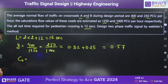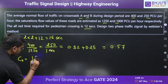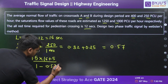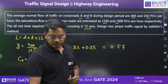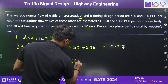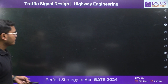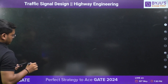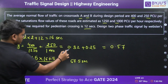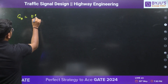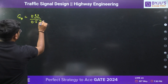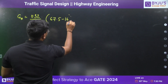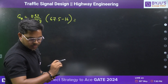Putting the values into the formula: C₀ = (1.5 × 16 + 5) / (1 − 0.57). From here, the optimum cycle length is 67.5 seconds. Now let's see how much green time road A gets: Gₐ = (0.32 / 0.57) × (67.5 − 16) = 29 seconds.